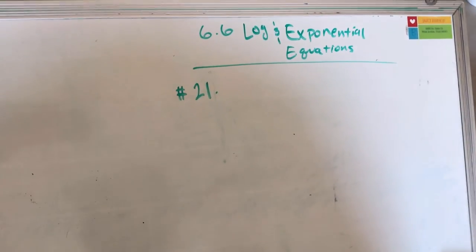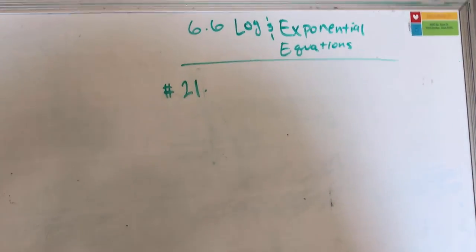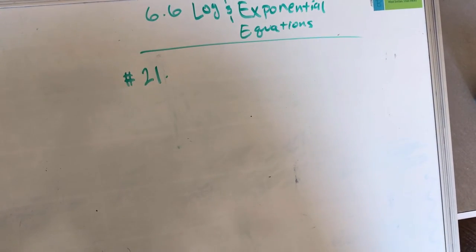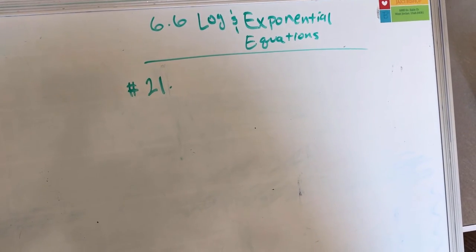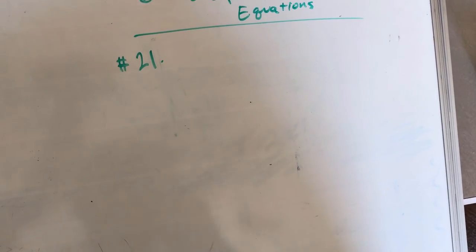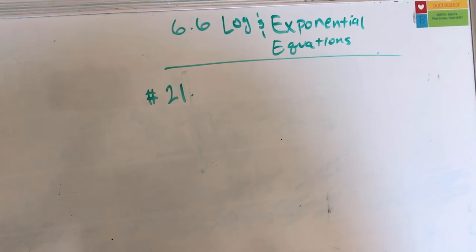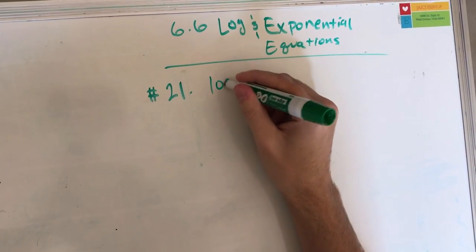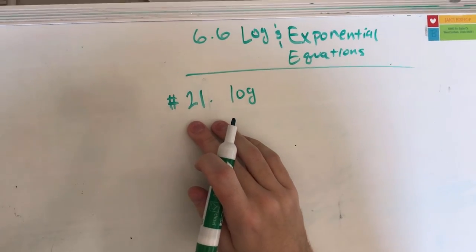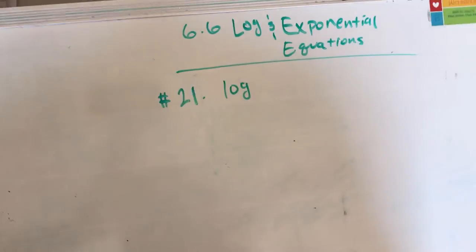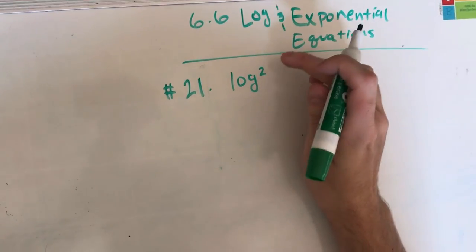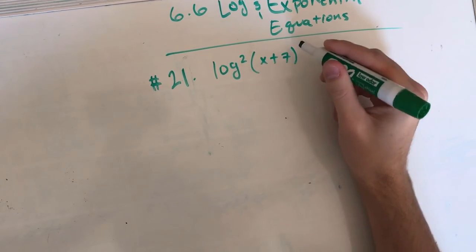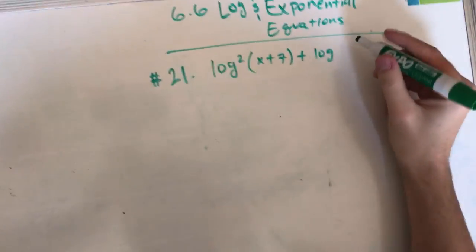Section 6.6 is log and exponential equations. This one was really tough for me to understand in class — I was really frustrated, and when I got home it was even harder. But I took an extra couple hours to try to understand it, and I do believe I have it down. The problem given — also a review question for the test — is: log base 2 of (x plus 7) plus log base 2 of (x plus 8) equals 1.